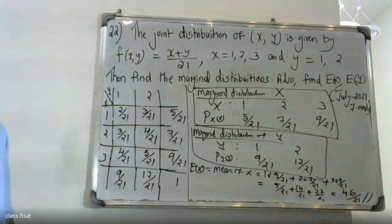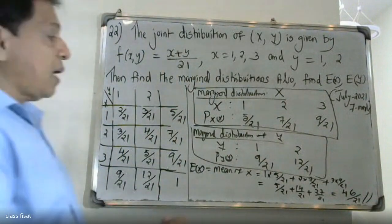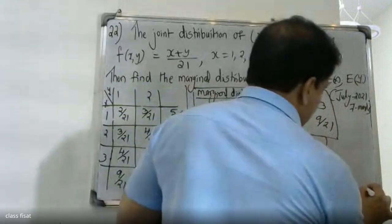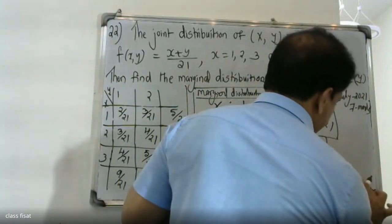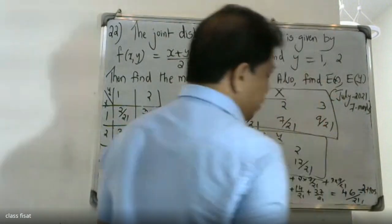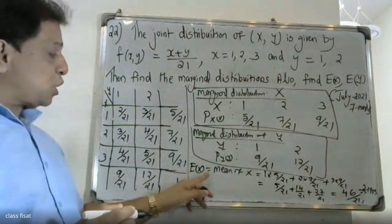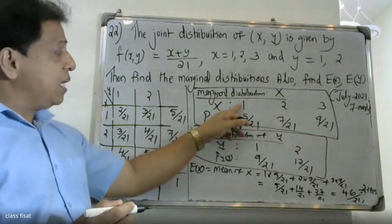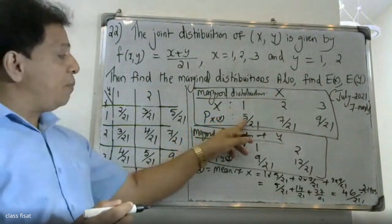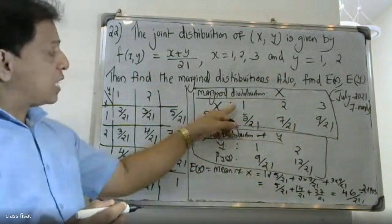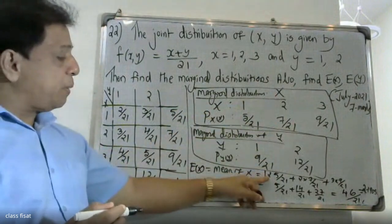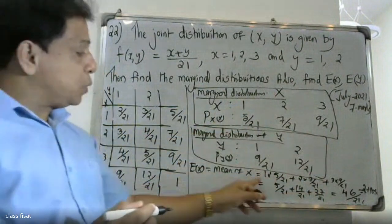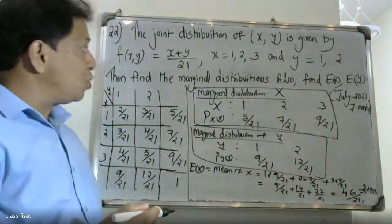The mean of X comes out to 46/21, which equals approximately 2.19. So the expectation of X is 2.19. To verify: 1 × (5/21) + 2 × (7/21) + 3 × (9/21) = 46/21 ≈ 2.19.